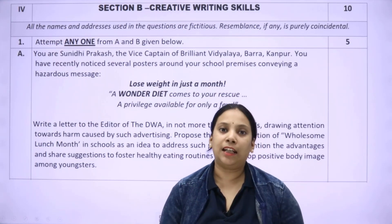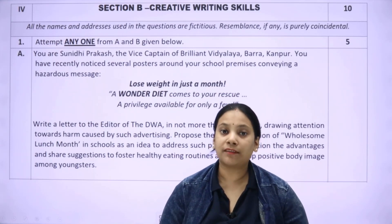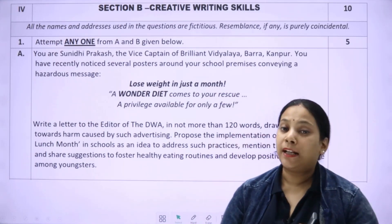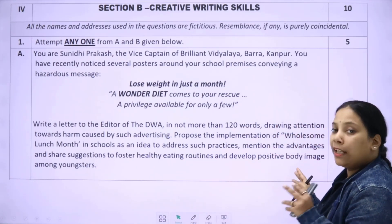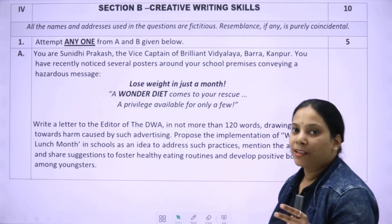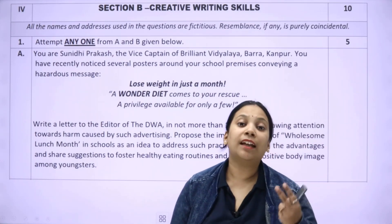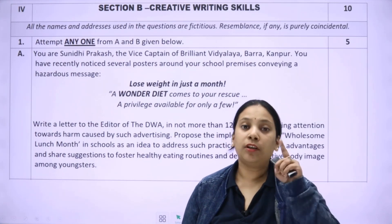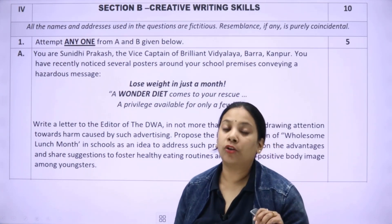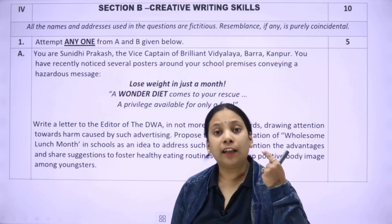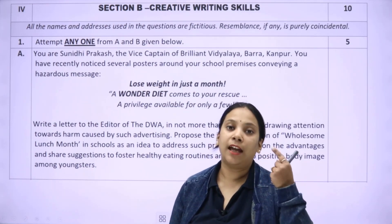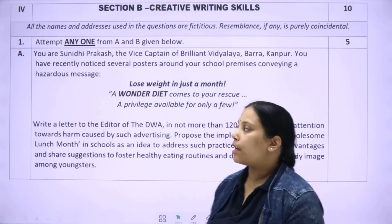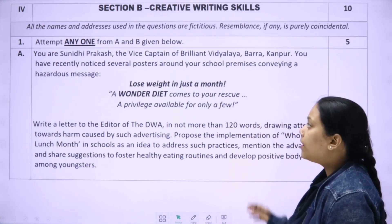Those were all the grammar questions. Now we move to the writing section — analytical paragraphs and letter writing. For letters, you get two options, and for the paragraph, two options. You have to attempt one from each. Every question has a weightage of five marks. Attempt only one from A and B given below.